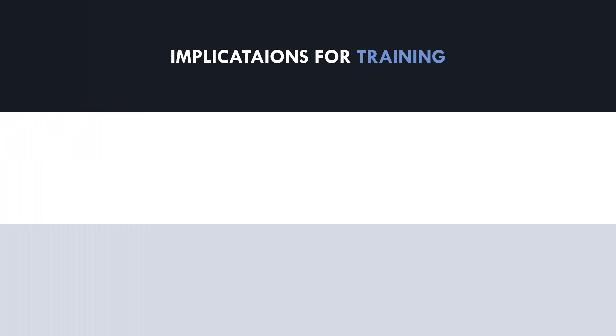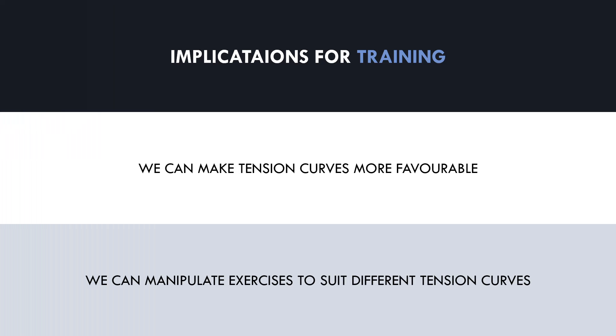So what implications does this have for hypertrophy training? We can potentially try to select exercises to make the loading more favourable for muscle growth — making the tension more constant throughout the range and ensuring a high degree of tension in a stretched position. Some standard free weight exercises naturally match up well with the tension curves of certain movements, while others don't. For the exercises that don't work well, we can make slight adjustments to suit their specific tension curves.